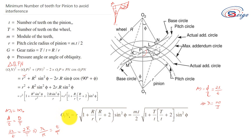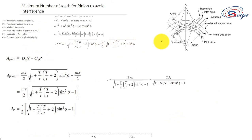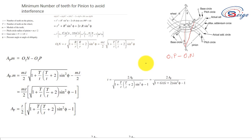Thus O1N equals mt over 2 times the square root of 1 plus capital T over small t times the quantity capital T over t plus 2, all times sin squared phi. The addendum is the distance O1N minus O1P, and the addendum of a pinion is given by AP times M, where AP is the fraction by which the standard addendum of one module for the pinion is multiplied in order to avoid interference.